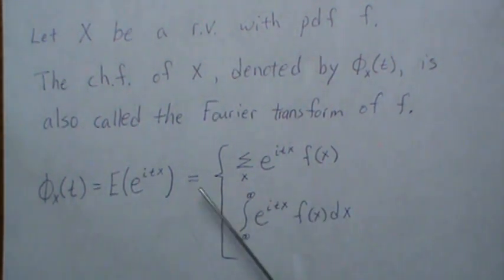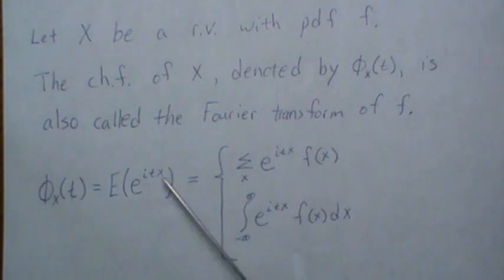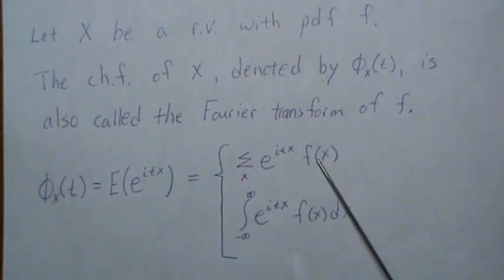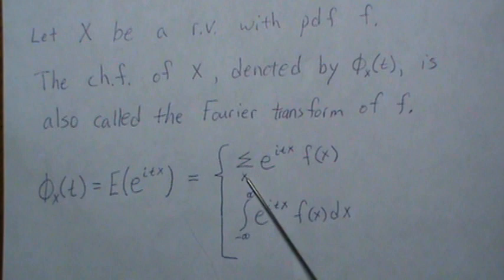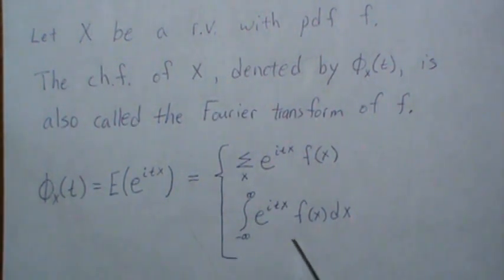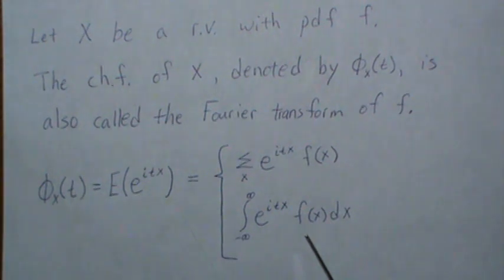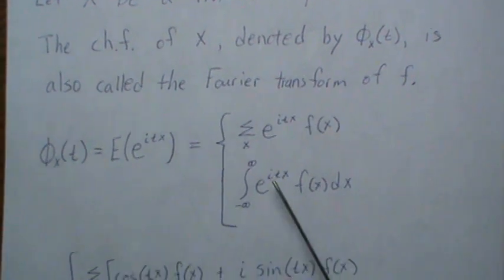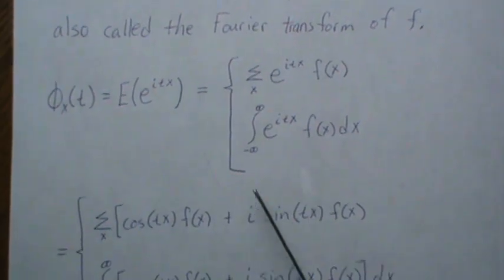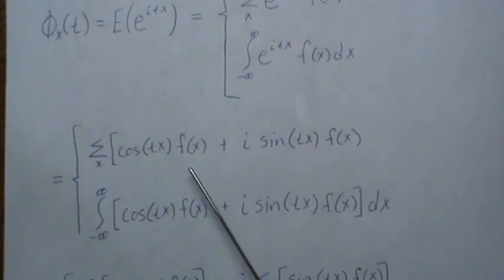If X is discrete, you sum e^{itx} times the probability mass function over all values. If X is continuous, you integrate over all values. That's it.